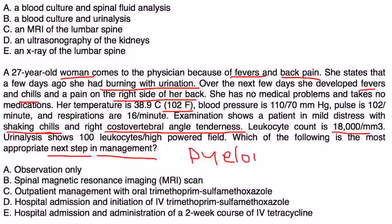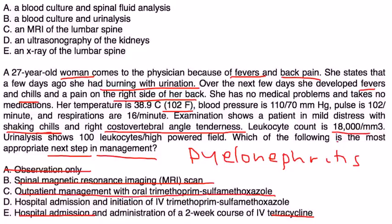Again, there's no doubt she has pyelonephritis. While you definitely need to treat her, observation is out. There's no reason for MRI. Hospital admission with IV antibiotics for a two-week course of tetracycline is also wrong — tetracycline is not used in the treatment of pyelonephritis. So that leaves choices C and D. She is not a candidate for outpatient treatment because she is quite ill: she has a very high leukocyte count suggesting possible sepsis, shaking chills, and is still febrile. So she needs to be admitted and treated with IV antibiotics — that would be choice D.